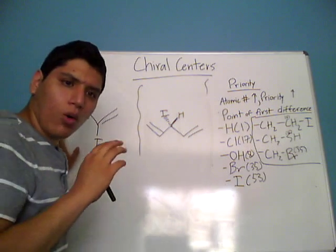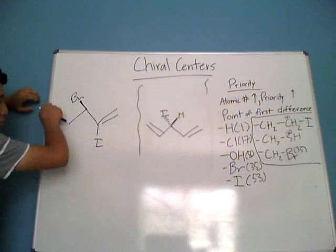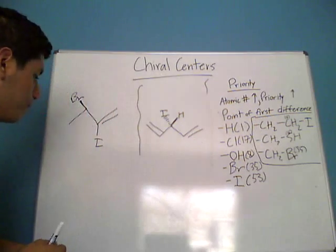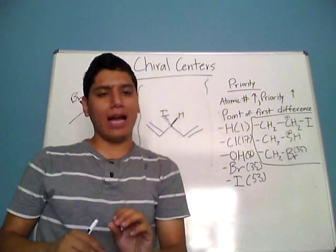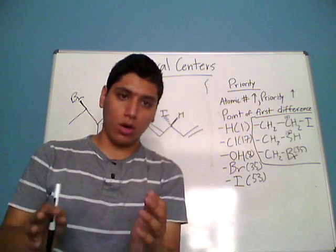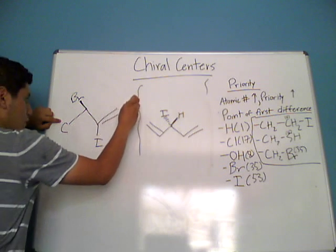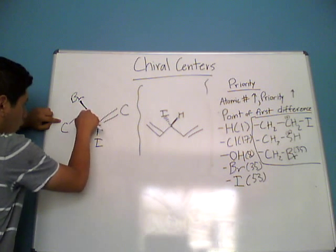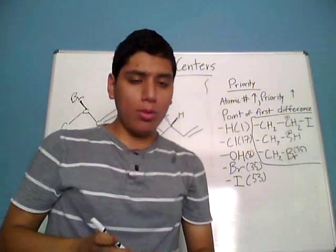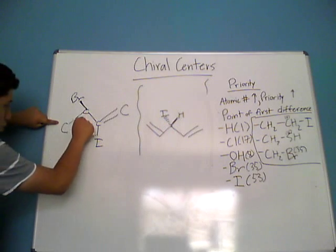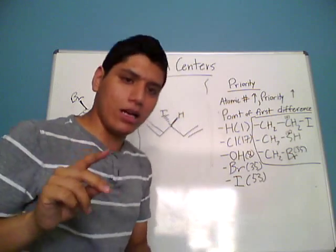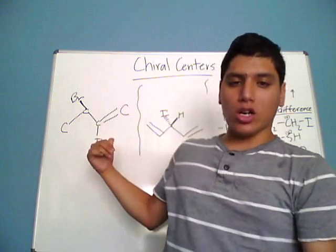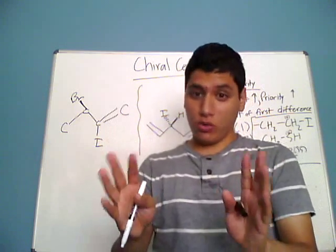First we've got to know where the carbons are. Whenever you're drawing something in this shorthand stick method, if there's any atoms missing, it's normally a carbon atom. So just for simplicity's sake, I'm going to be drawing them in, but just keep in mind that they're not always going to be shown on an exam or in a textbook. Another important rule of thumb is that carbon likes to have four bonds, so carbon-hydrogen bonds are normally left out, but I'm going to put them in for simplicity's sake.